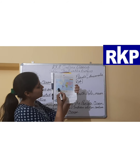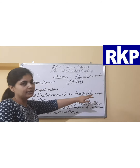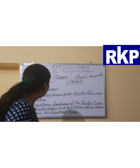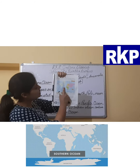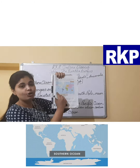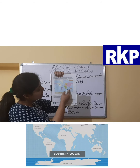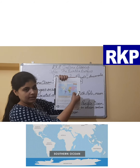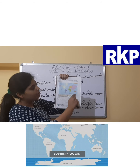Our next ocean is S, which stands for Southern Ocean — it is pronounced 'Southern,' not 'southern.' It is the fourth largest ocean of the world. In terms of location, it is located around the South Pole, near Antarctica. We have discussed the North Pole and the South Pole previously.